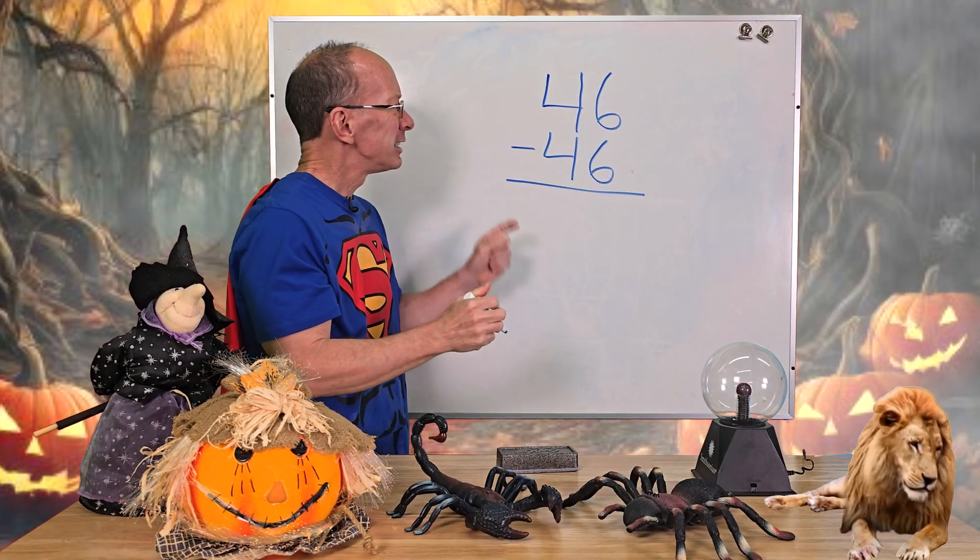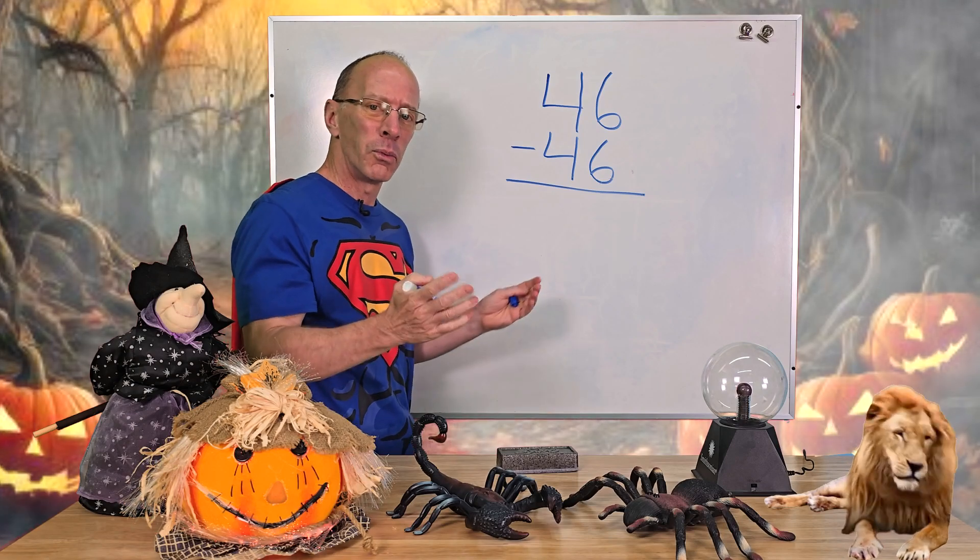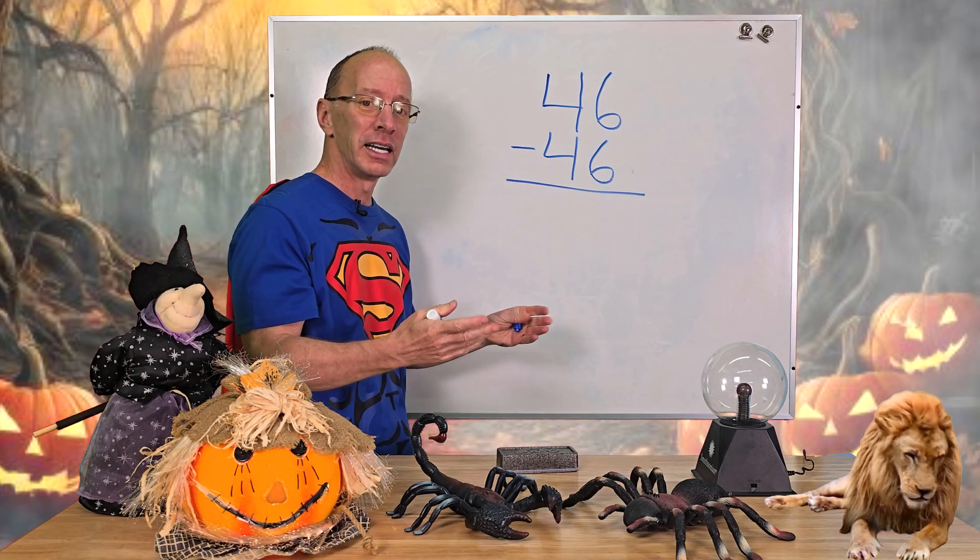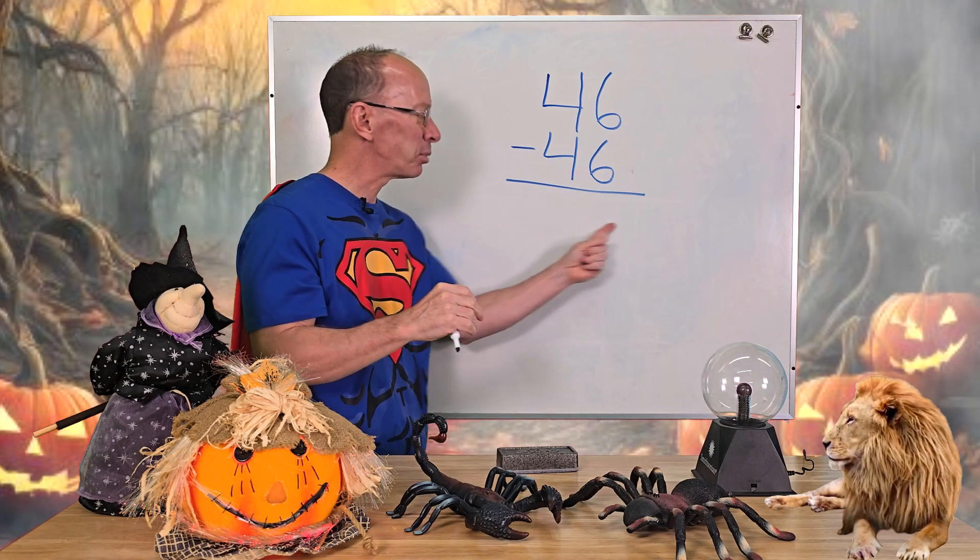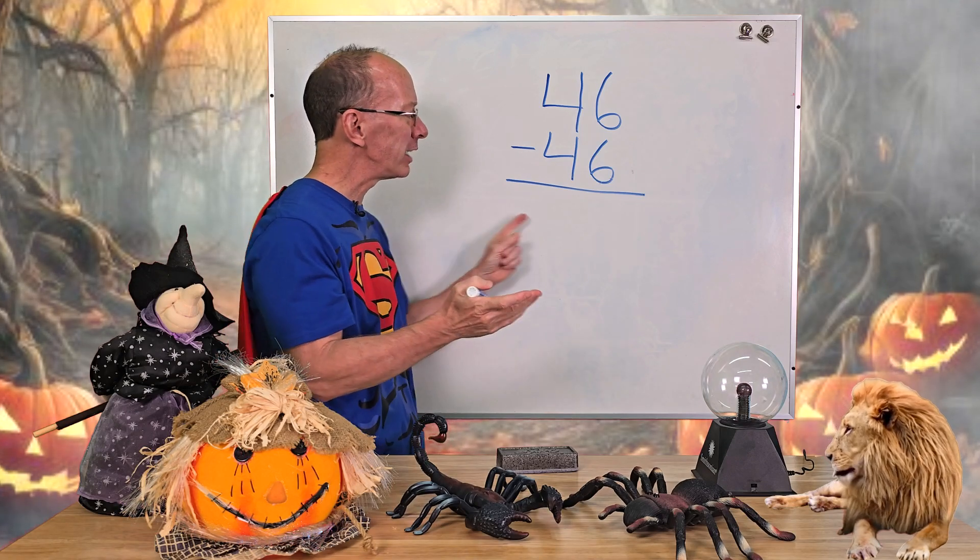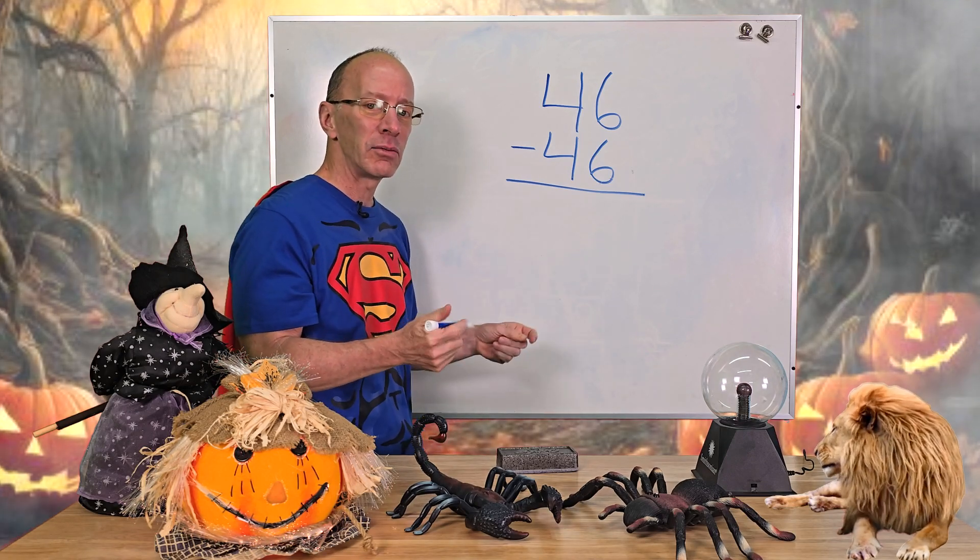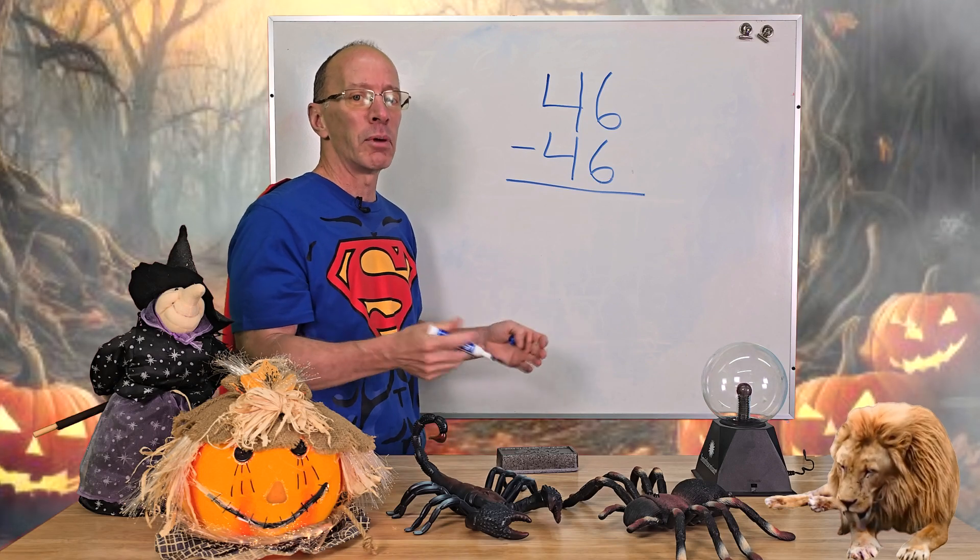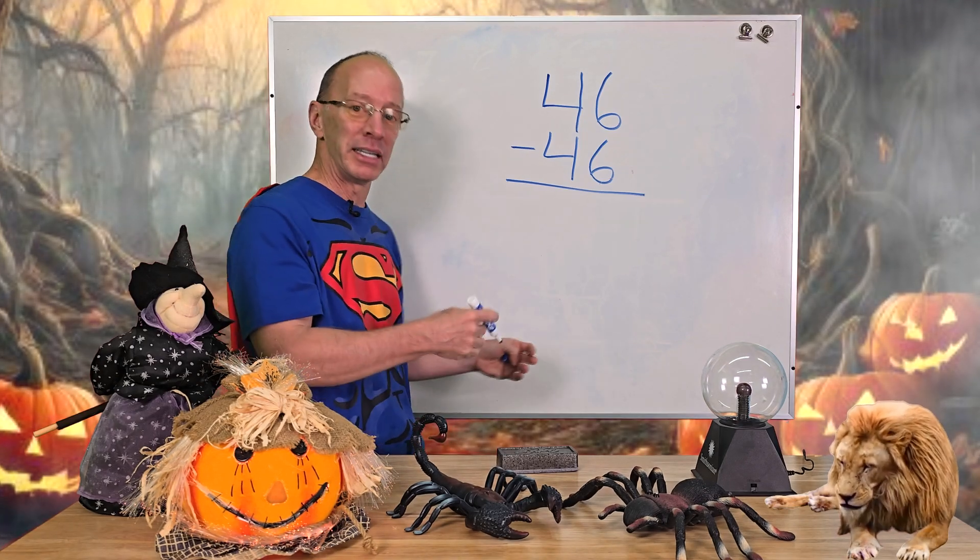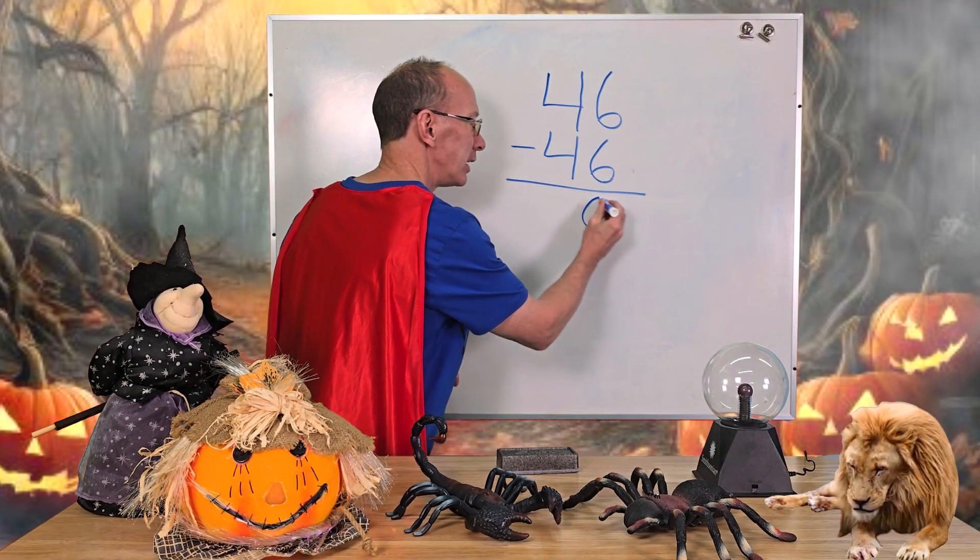All right, take a look at this problem right here. You got 46 and you want to take away 46. Now, I did have a couple of students and they would not put anything right there. They just left it blank. And I asked them, well, why did you leave that blank? And they said, well, it's zero. But we need a number to represent zero. So that would be zero. You need to put zero right here.